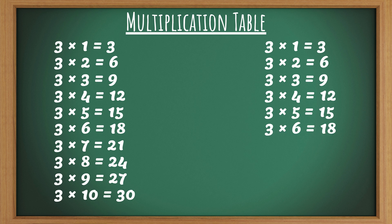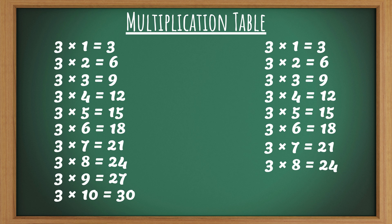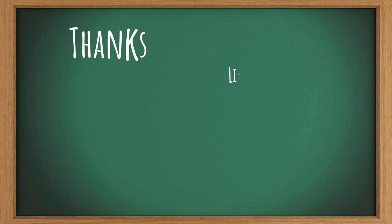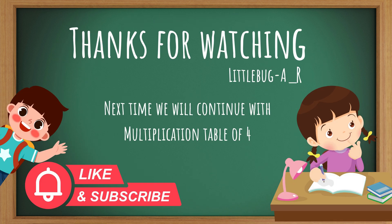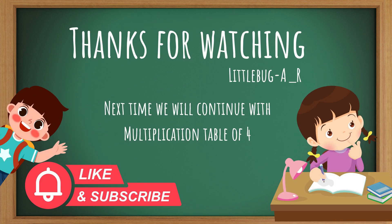3 6s are 18. 3 7s are 21. 3 8s are 24. 3 9s are 27. 3 10s are 30.